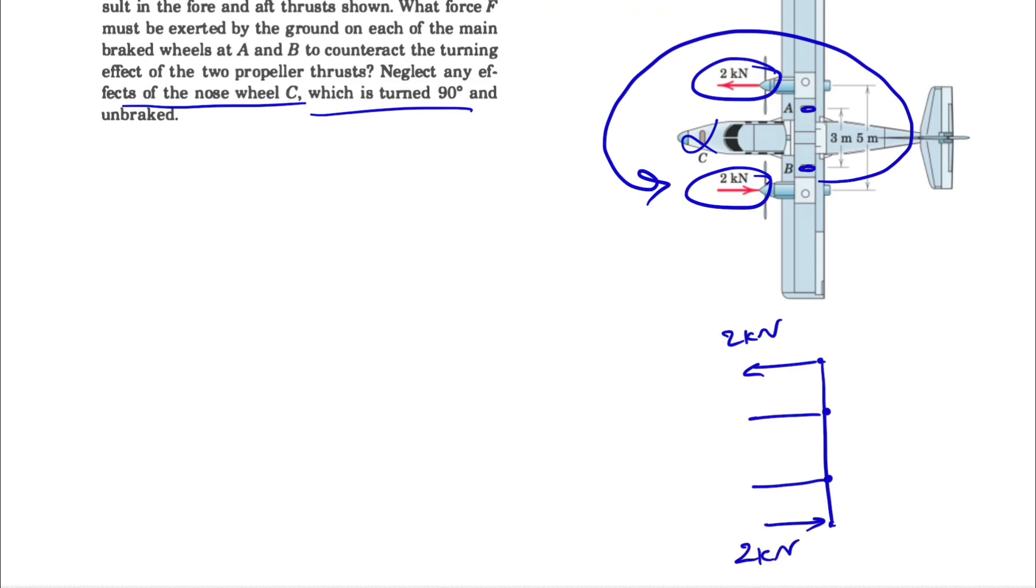As I said, these two forces are making a couple because they are two equal forces that are in the opposite direction and they're not collinear. So these are the three characteristics that we have for the couple. Basically, what we're going to make at point A and B is something that's going to make a couple exactly the same amount as that one in order to cancel out the turning effect of the couple that we have from these two forces.